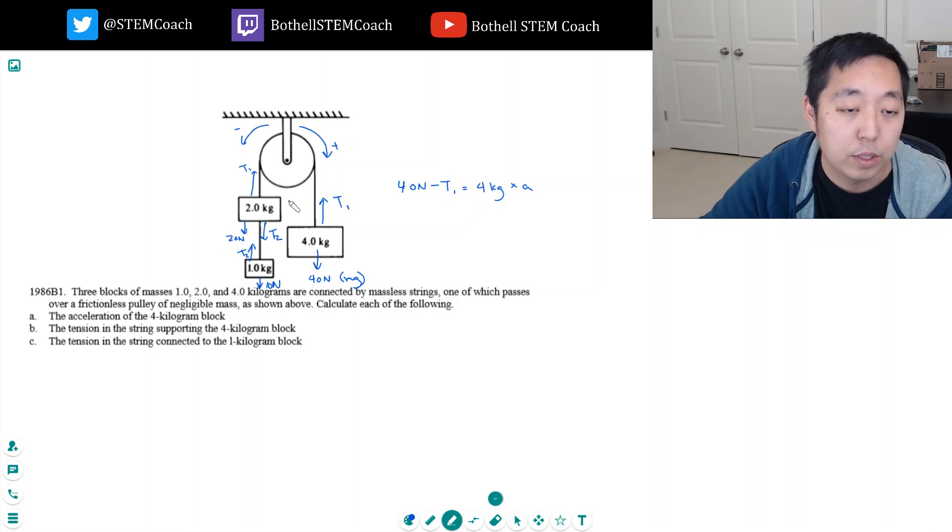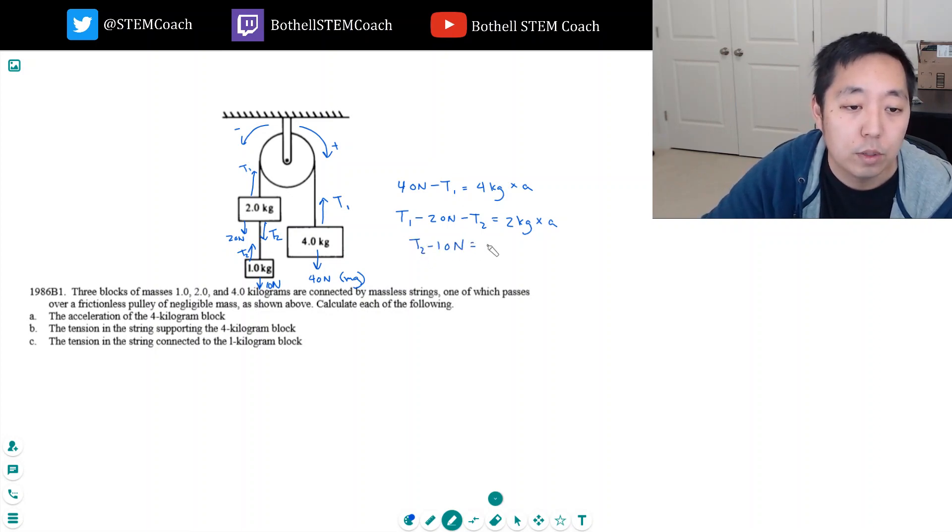Now let's look at this equation. This is T1 minus 20 newtons minus T2 has to equal his motion in that direction, which is 2 kilograms times A. And then the last one, now if this didn't have T2 in it I could solve, because I could solve for T1 and plug it into here. But now I have another unknown, so I need a third equation, which is this one. T2 minus 10 newtons equals 1 kilogram times A.